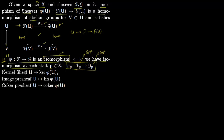Now we want to talk about three sheaves. First, the kernel sheaf: you feed in U into your sheaf, and the sheaf returns the kernel of φ(U), which is a group. So you feed in an open set U contained in X and it gives you the kernel of φ(U).